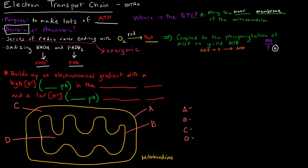So how exactly does that even happen? Well, the electron transport chain is supposed to build up an electrochemical gradient with a high H+ concentration and a low pH in the intermembrane space, and a low H+ concentration — which would be a high pH — in the mitochondrial matrix.